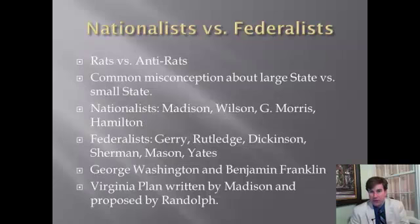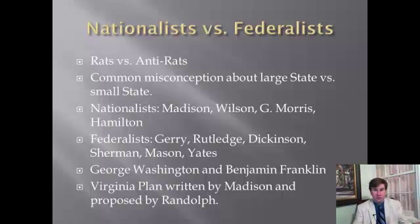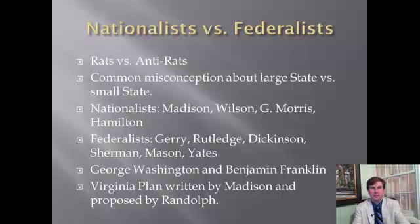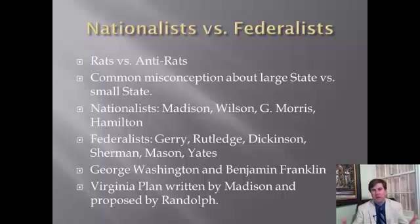There's a common misconception about large state versus small state. What Elbridge Gerry actually called the individuals there was 'rats and anti-rats.' You had two groups: the nationalists and the federalists. This is really not a large state versus small state issue. It's often put in that language because it minimizes the real problem between federalists and nationalists. The federalists would later be called the anti-federalists, but they're the real federalists. The nationalists wanted a strong national government — talking about abolishing the states or at least minimizing their power. The nationalists included Madison, James Wilson, Gouverneur Morris, and Alexander Hamilton. The federalists were people like Elbridge Gerry, John Rutledge, John Dickinson, Roger Sherman, George Mason, and Robert Yates — people trying to check this nationalist impulse.